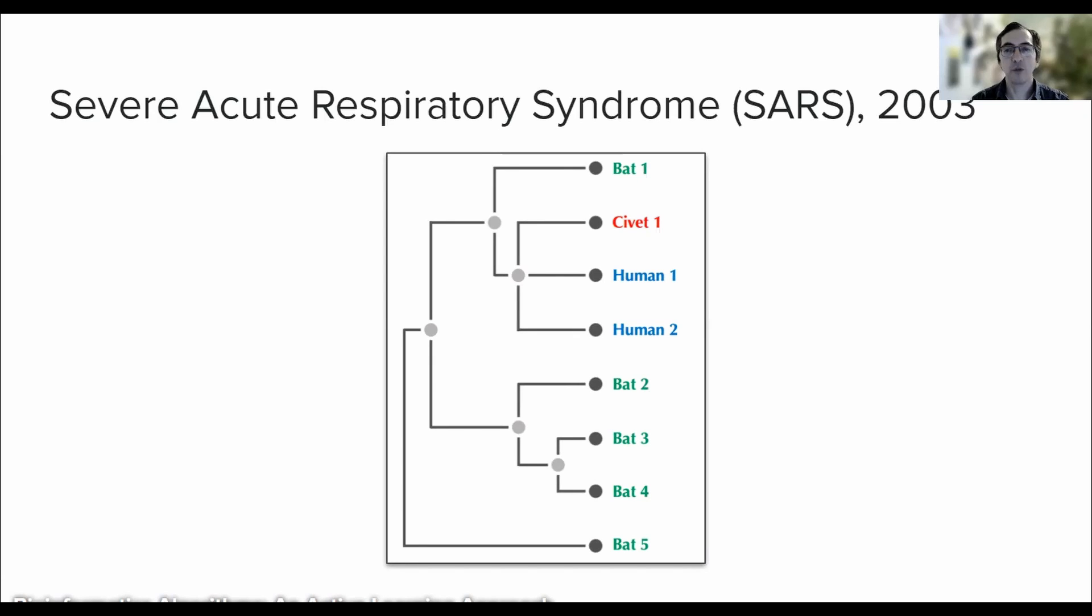In particular, they found that both the civets and human variants of SARS-CoV were nested within a bat virus phylogeny. Therefore, viewpoints were shifted towards the intermediate host hypothesis in the case of SARS-CoV-1, which remains the leading theory to this day.